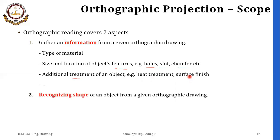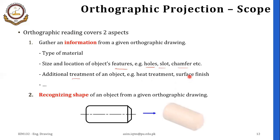The second aspect of orthographic projection is recognizing the shape of an object from a given orthographic drawing. These are the two main important aspects of orthographic projection drawings.